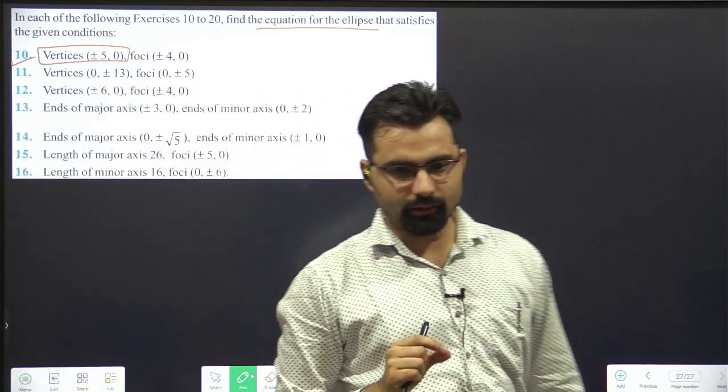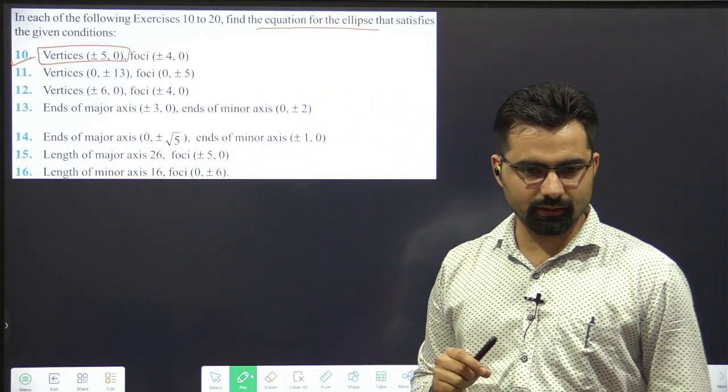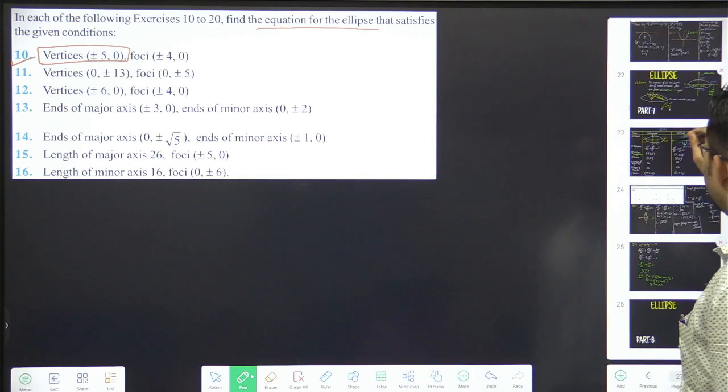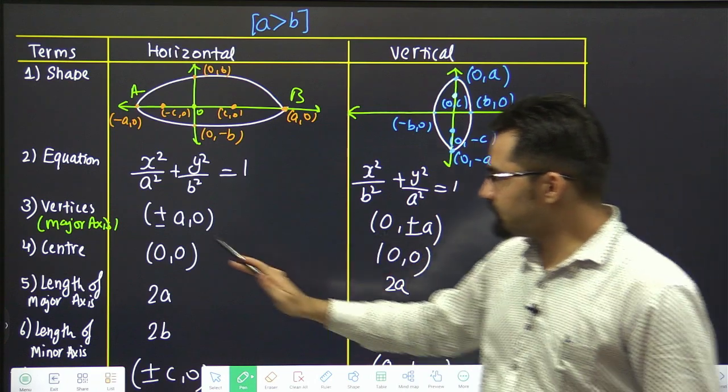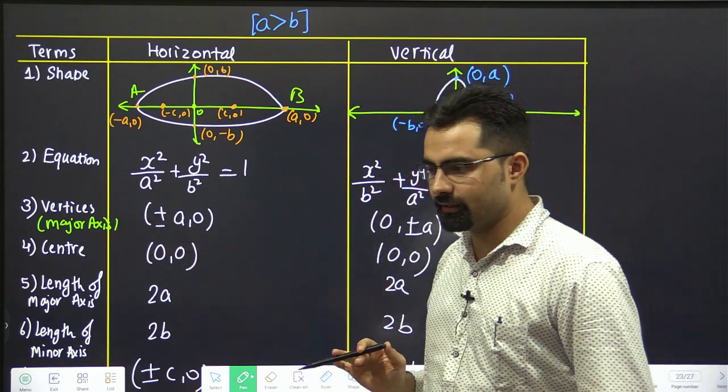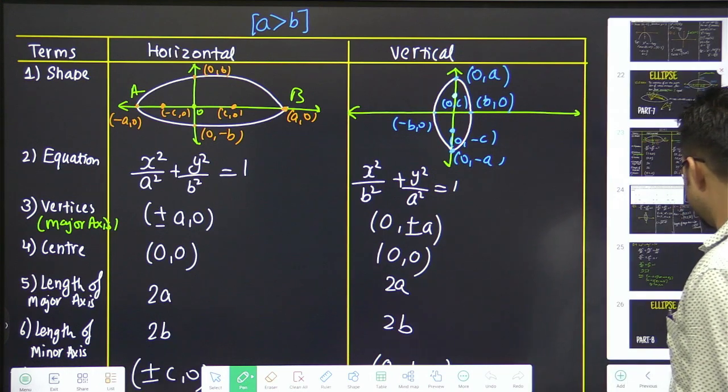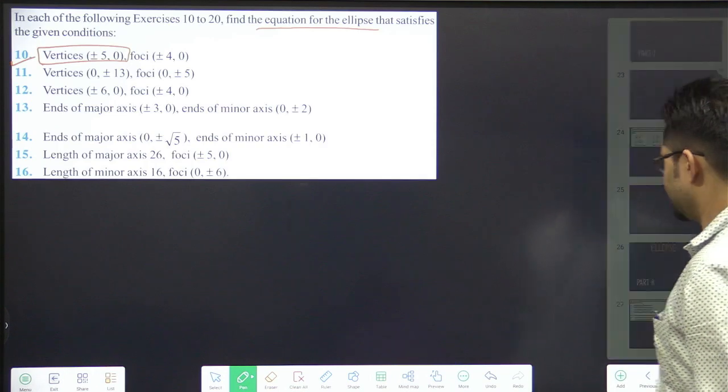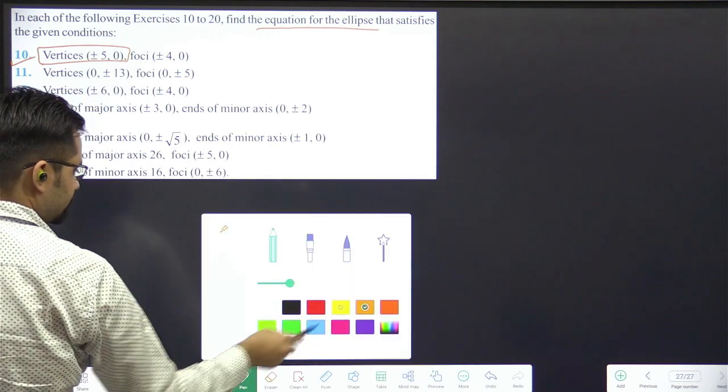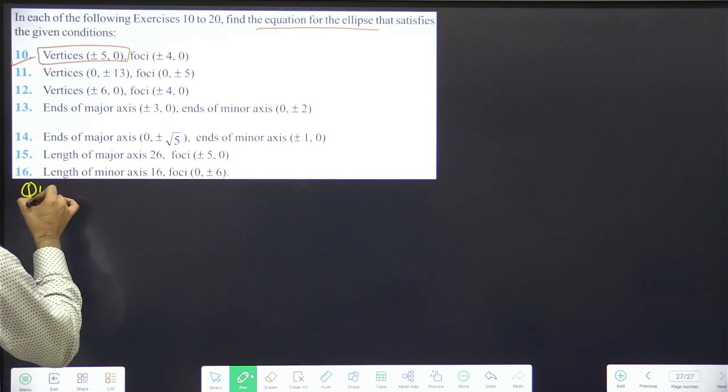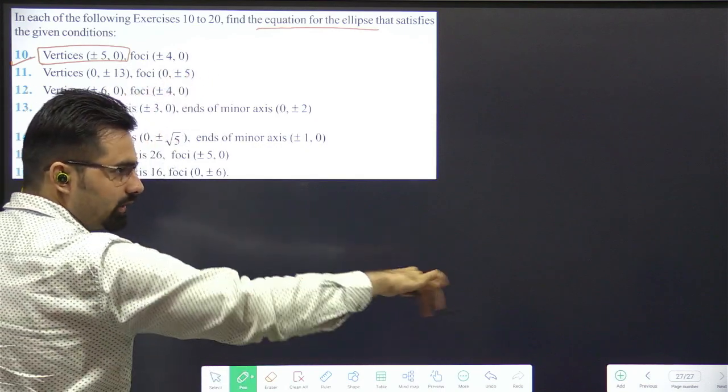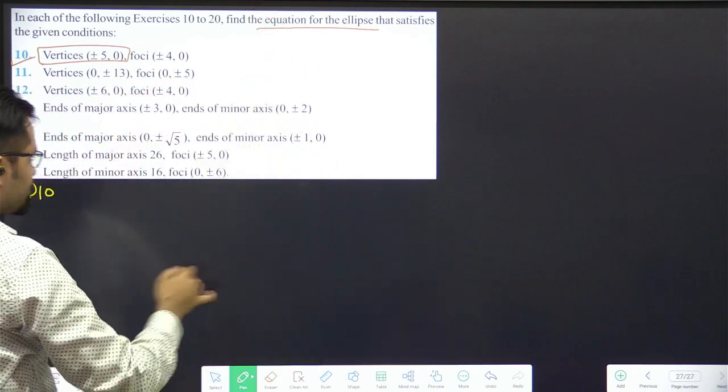When we have vertex, where is vertex? Major axis. Let's see the table. When you say vertex, it means which vertex? Major axis. Clear? So vertex is major axis. Which ellipse? Horizontal or vertical? Horizontal.